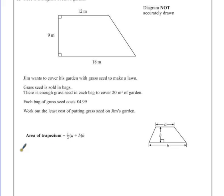So if we want to work out the area of his garden, we know we're going to have to half, because that's the first part of the formula. We know we have to add together the parallel sides. So that's 12 add 18. We're going to have to multiply this by the height. So we've got 12 add 18 times by 9 and half it.